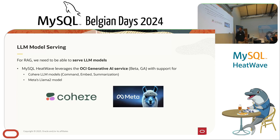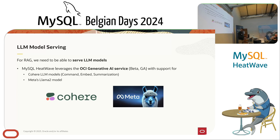As I said, we need three ingredients for retrieval augmented generation. The first is we need to serve a language model. Luckily, I can talk about it because it's already in GA. MySQL HeatWave can leverage internally the OCI Generative AI service. It has support for two classes of models: the Cohere LLM models for different types of text generation including summarization, and the Llama 2 open-source model. So initially MySQL HeatWave will leverage this integration with the OCI Generative AI service.